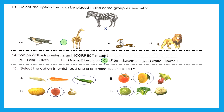Question 15: select the option in which the odd one is encircled incorrectly. Option A: carrot and radish are edible roots, but lady's finger is an edible fruit — they have encircled the right odd one out, so this is correct. Option B: they have encircled mango. Tomato and mango are edible fruits, but beetroot is an edible root — they should have encircled beetroot. So option B is the wrong encirclement and is our answer. Options C and D are encircled correctly. Option B is the right answer.